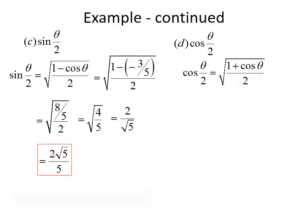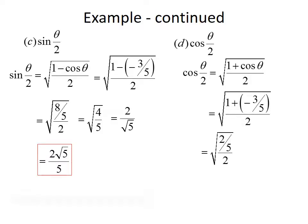Next, the cosine of theta over 2. Using the half angle formula, cosine of theta over 2 equals the square root of 1 plus cosine theta over 2. Plugging in negative 3 fifths, we get the square root of 1 minus 3 fifths over 2. Rewriting 1 as 5 over 5, the numerator becomes 2 fifths. Multiplying 2 fifths by 1 half, the 2s cancel, giving us the square root of 1 over 5, which equals 1 over root 5, rationalized to root 5 over 5.